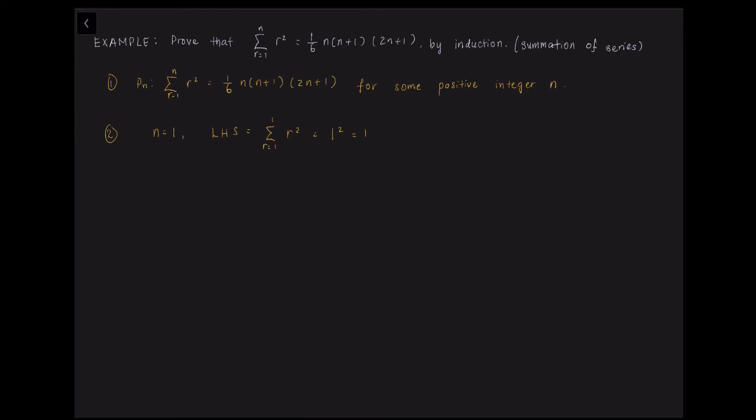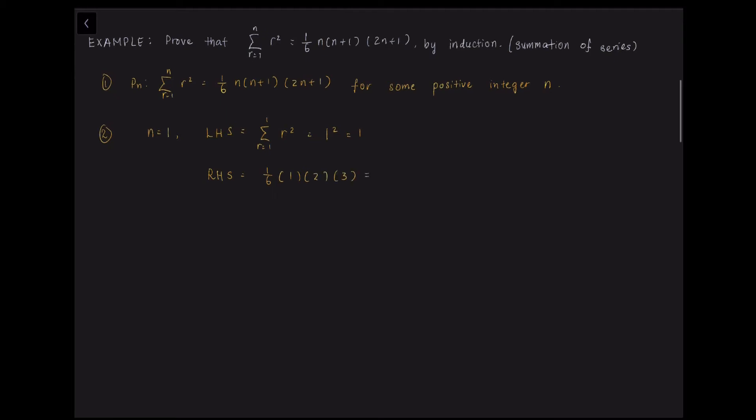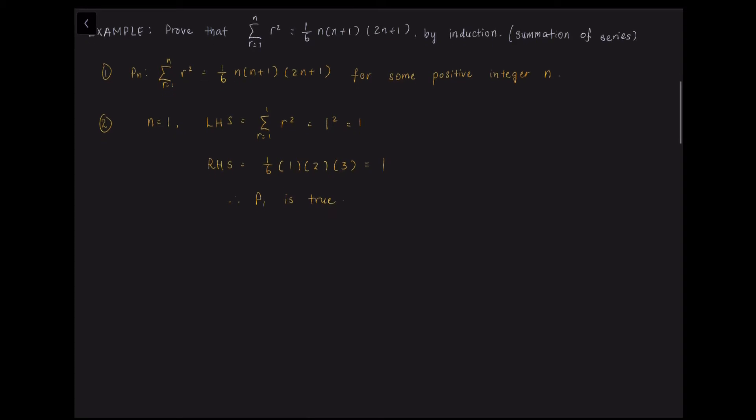And then for the right hand side, we substitute 1 into the equation. And then we got 1/6 times 1 times 2 times 3, which is equals to 6/6 and 1. So left hand side equals to right hand side. We say that P(1) is true.